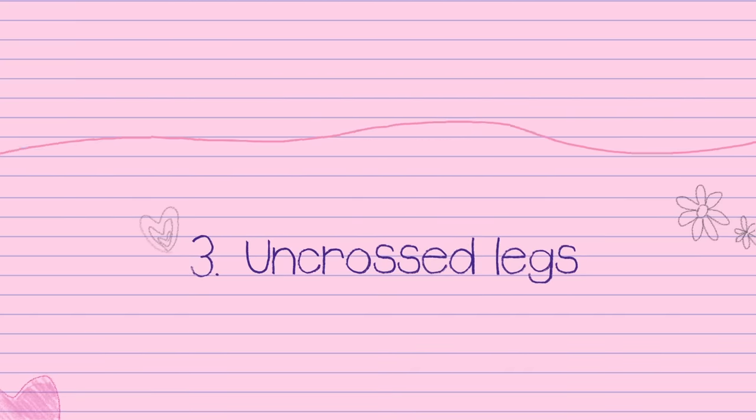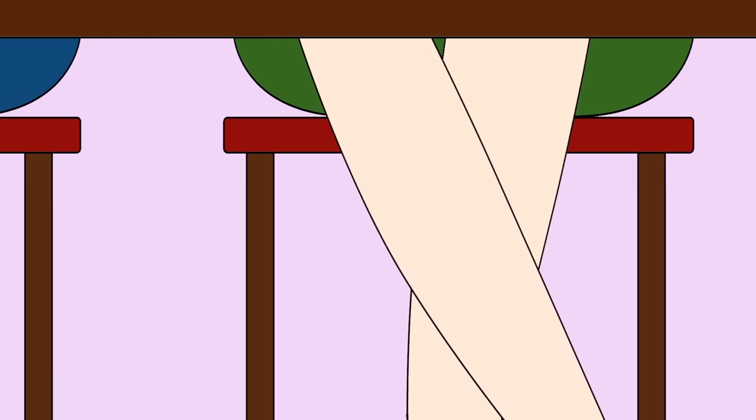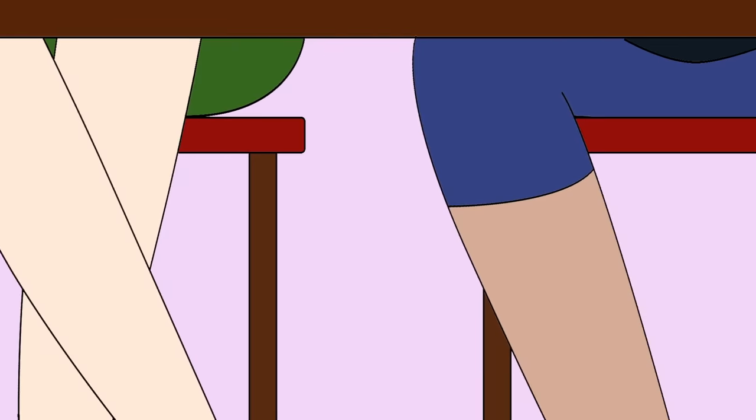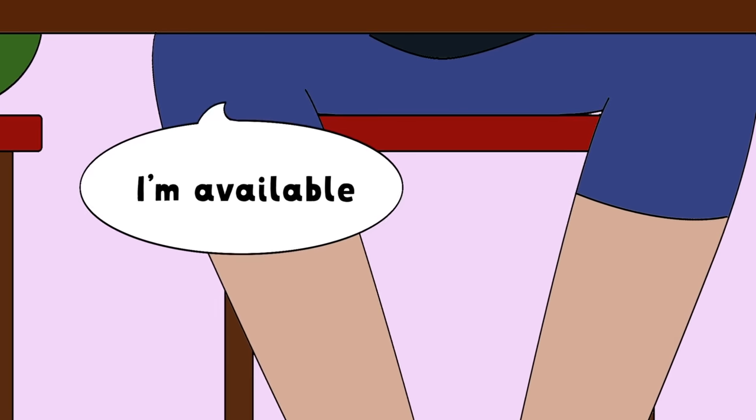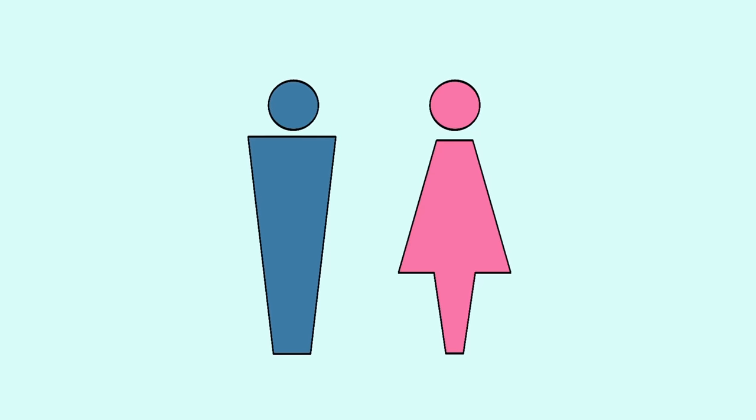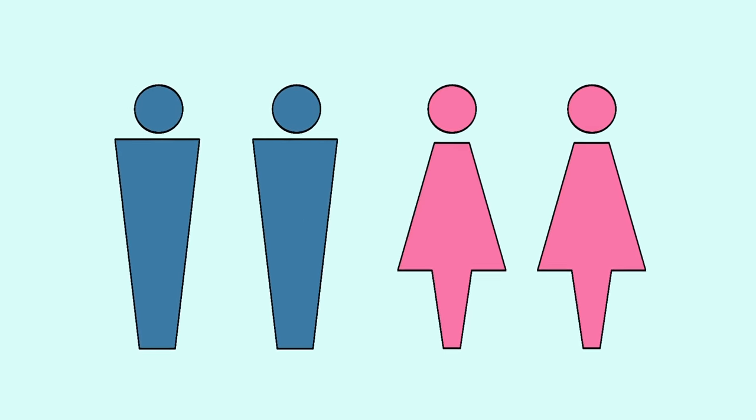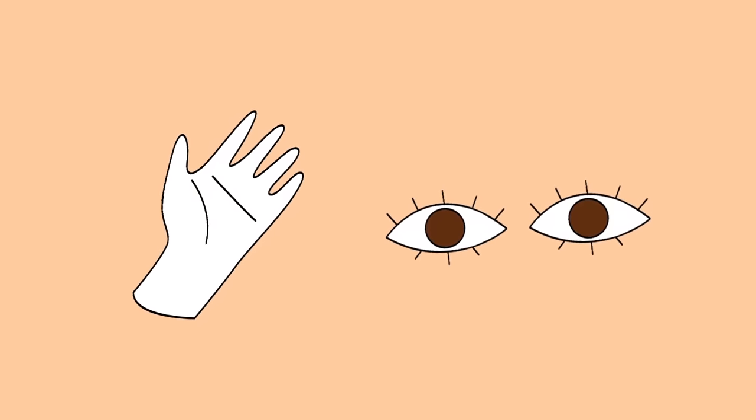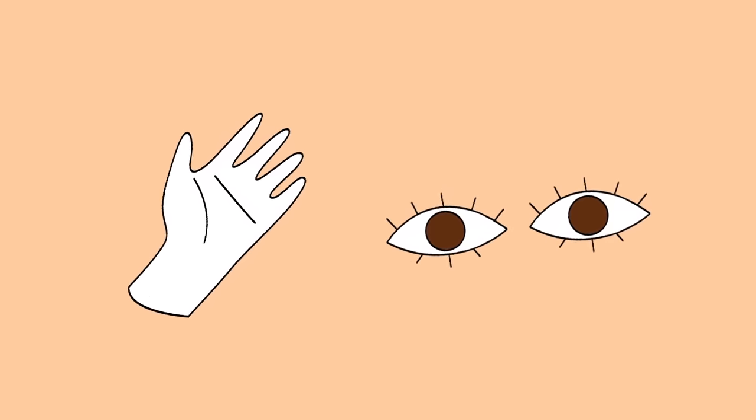3. Uncrossed legs. Body language also reveals a lot about availability. For example, when someone uncrosses their legs and arms, they're basically saying I'm available. This is basic body language in both men and women, so this rule also applies with same-sex couples. There are plenty of other signs of open body language such as upturned palms, maintaining eye contact, and many more.